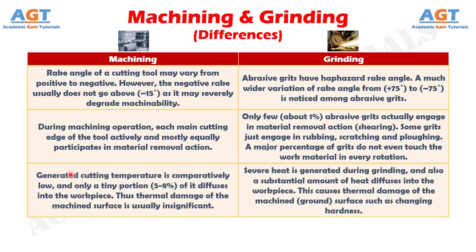Number 7: generated cutting temperature is comparatively low in machining, and only a tiny portion — 5 to 8% — of it diffuses into the workpiece. Thus thermal damage of the machined surface is usually insignificant, whereas severe heat is generated during grinding and a substantial amount of heat diffuses into the workpiece, causing thermal damage of the ground surface such as changing hardness.